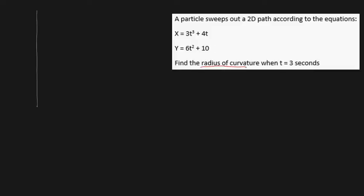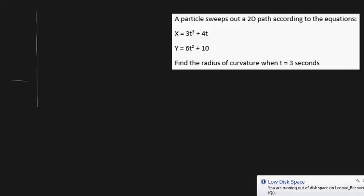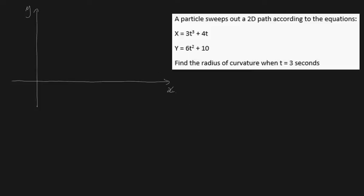Your first objection to a problem like this might be finding the radius of curvature when our path is clearly not circular. The trick to solving this is actually to plot our path on an axis. Our plot looks something like this, and this is what our particle looks like at t equals 3 seconds. The key insight is that every continuous and differentiable path has small parts which can be viewed as parts of circles. So this differential element right here can be viewed as just part of a much larger circle with radius r, which is what we're trying to evaluate.